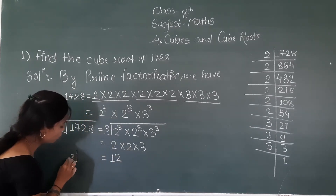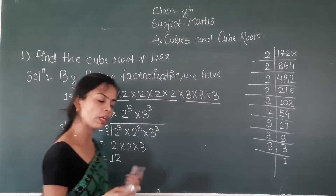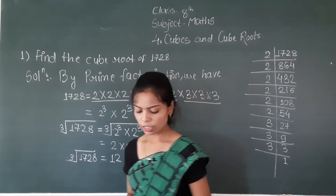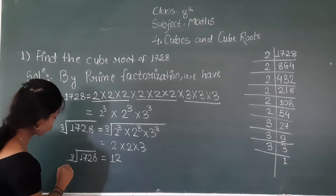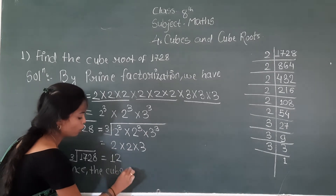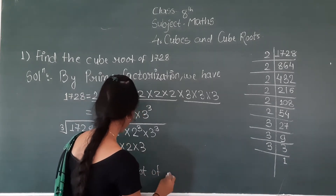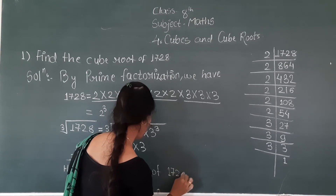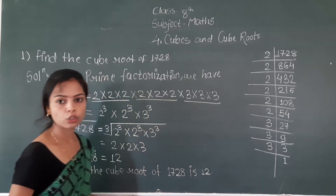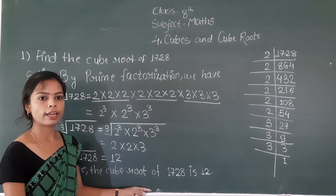The left side we have cube root of 1728. We have to write it as: hence, the cube root of 1728 is 12. The cube root of 1728 is 12. We have to write it as: hence the cube root of 1728 = 12.